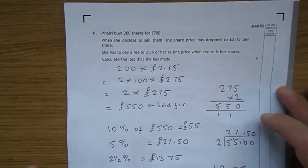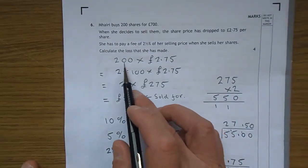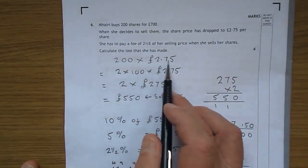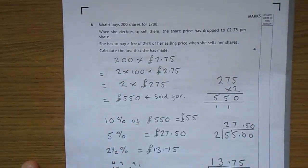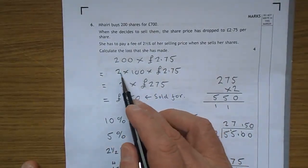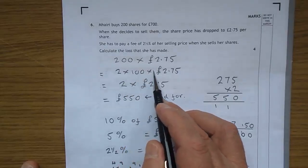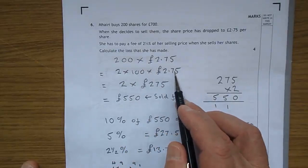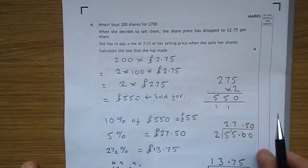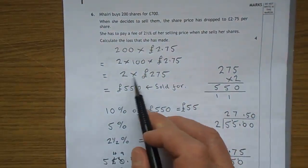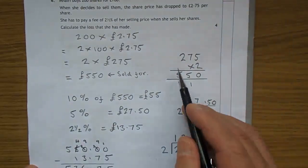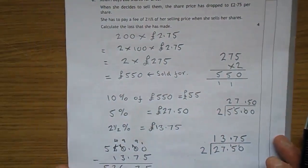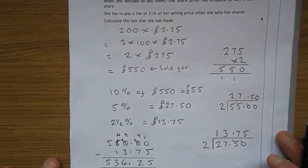Well first of all let's see what she actually got for selling her shares, that's obviously 200 times £2.75. 200 can be brought down into 2 times 100 times £2.75. 100 times £2.75 is 275, times that by 2, you can see my little calculation there, 550. So she sold her shares for £550.